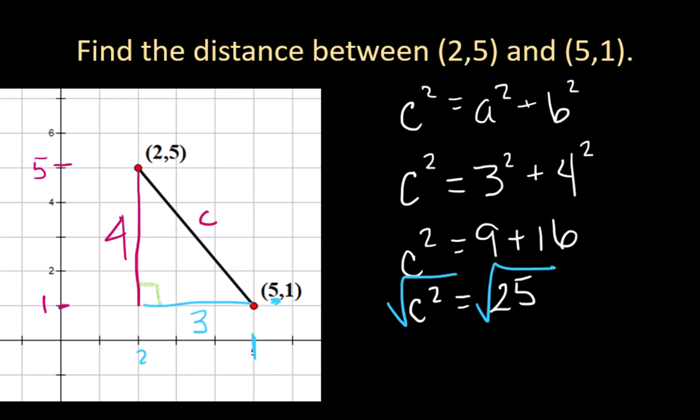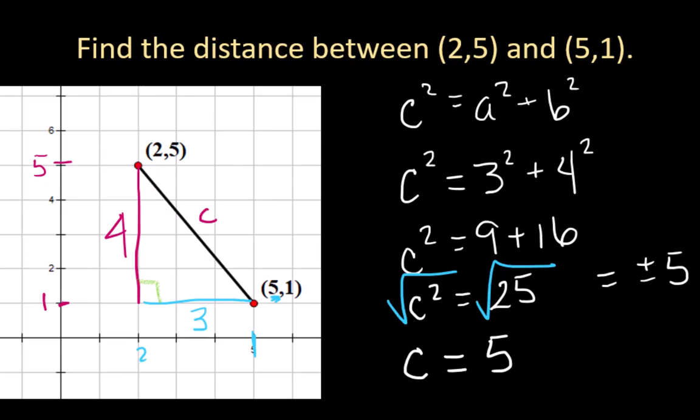And the reason I think I'm calling this an easy problem is because what you're going to get is a whole number which sometimes you don't do that when you're doing square roots. Now in algebra class we would say that this answer is plus or minus 5 but in geometry or in any kind of a context where you are finding a length the negative is not going to make sense here so we're going to just say that c equals 5.